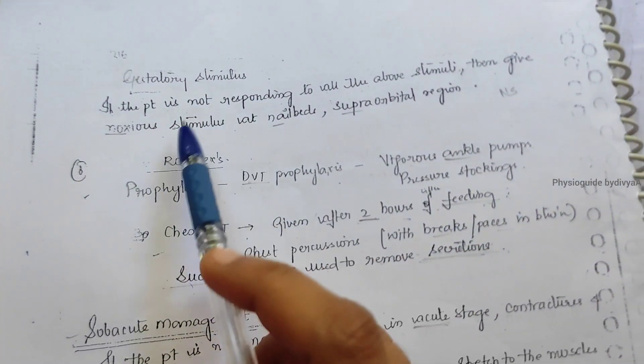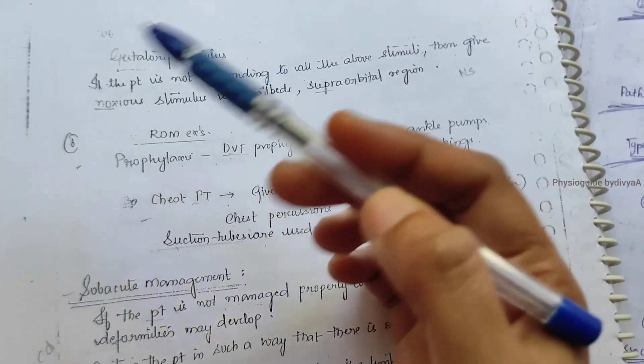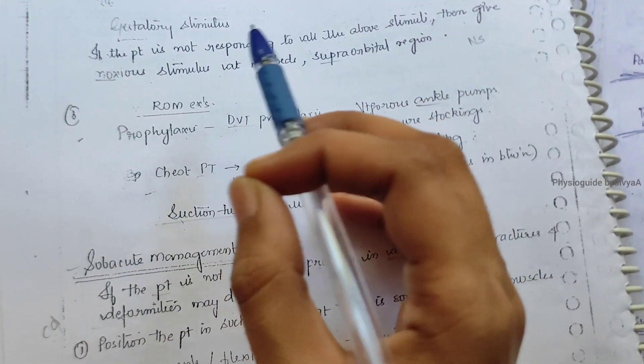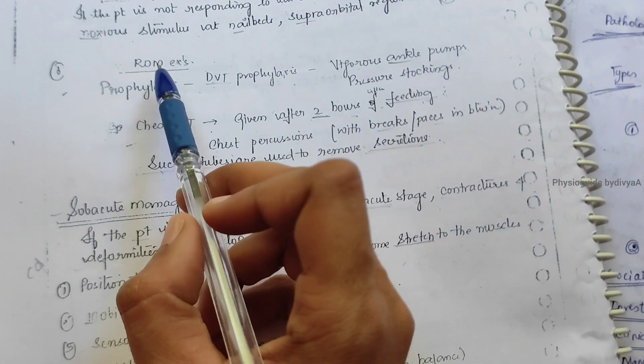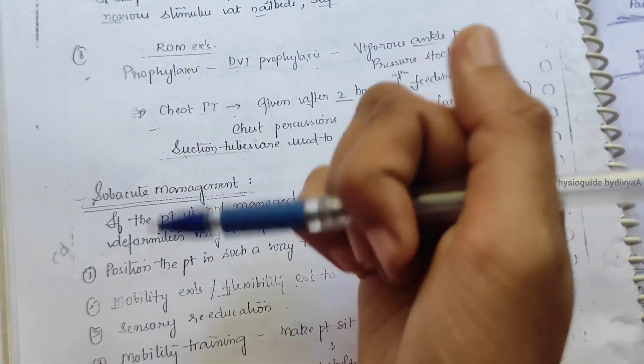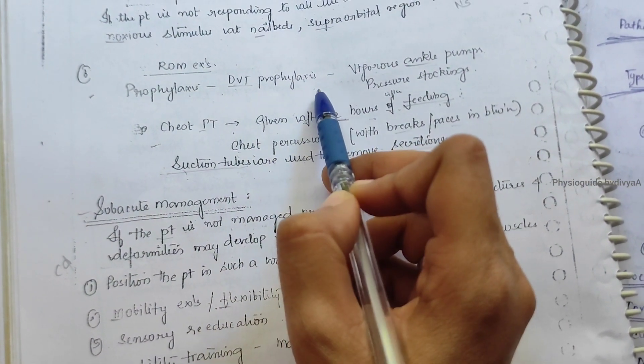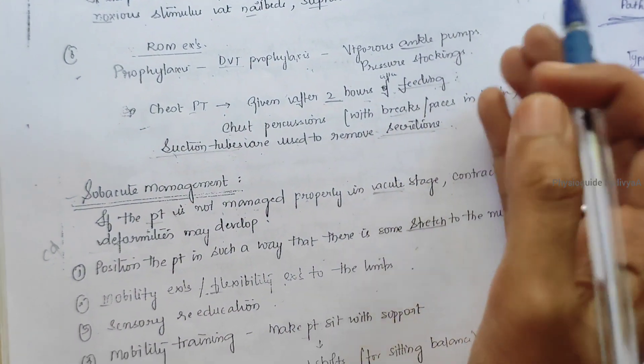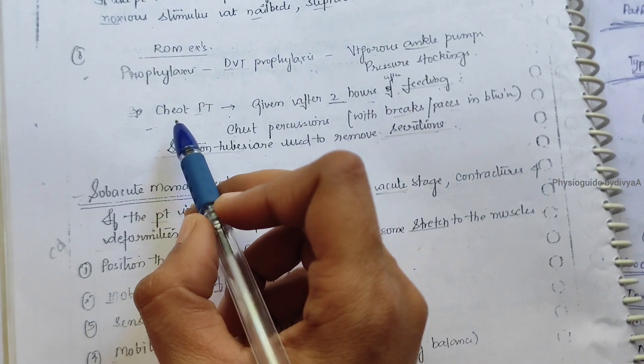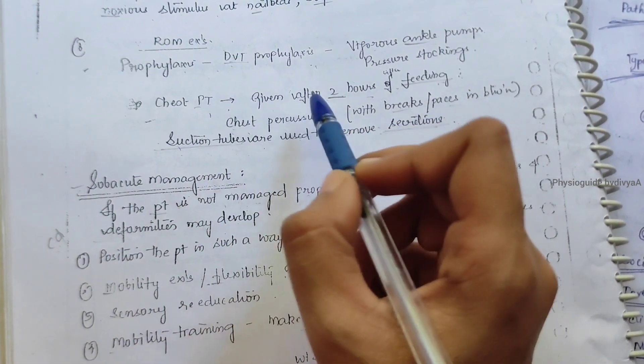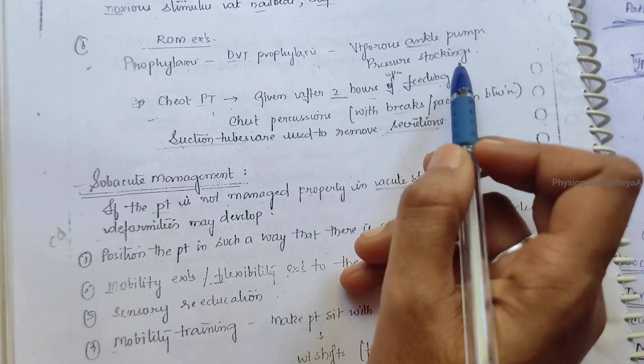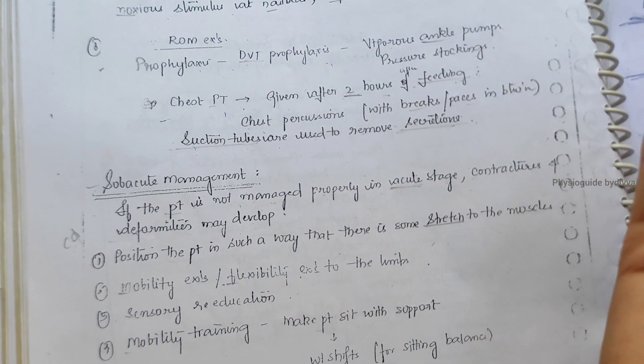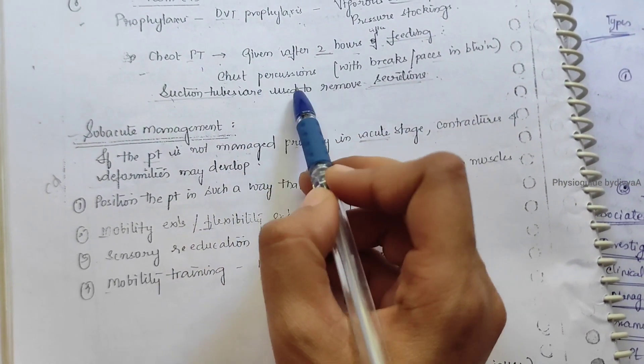If the patient is not responding to all the above stimuli, give noxious stimulus at the nail beds and supraorbital region. ROM exercises include DVT prophylaxis with vigorous ankle pumps and pressure stockings. Chest physiotherapy should be given two hours after feeding - chest percussions and suction to remove secretions.